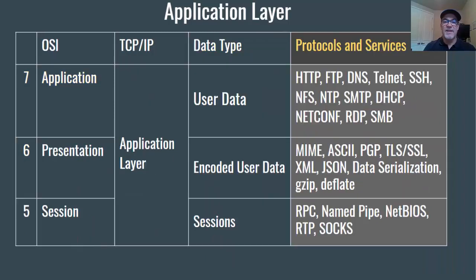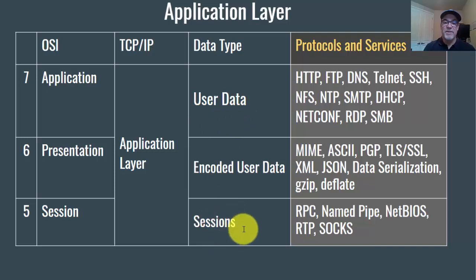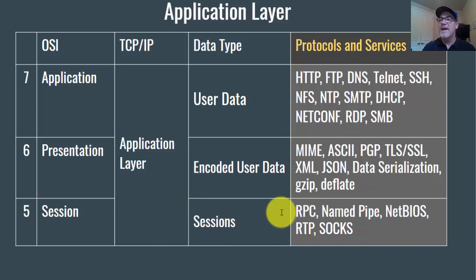At the application layer, we're talking about data — user data. The presentation layer encodes that user data into a different format. This data is then sent through a connection to an application on the other end. Oftentimes, when talking about these types of connections across a network, it's a client-server connection — a client application like a web browser and a server application like a web server.